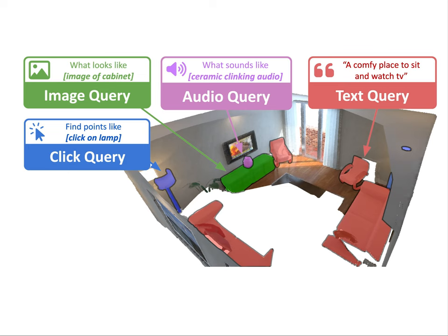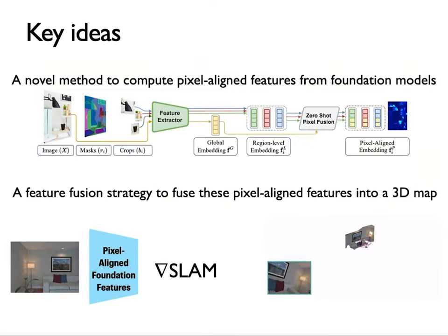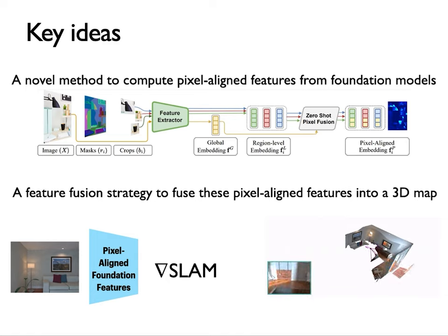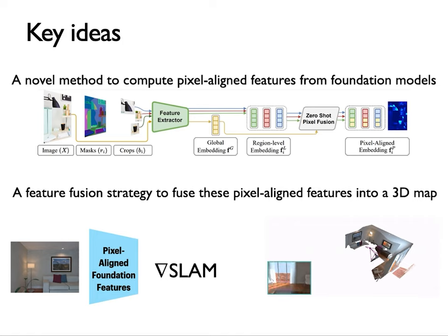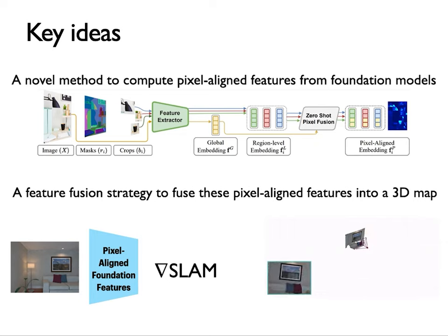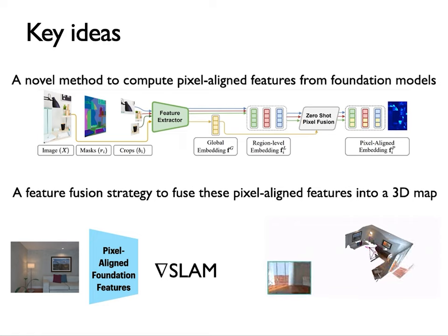So how does Concept Fusion do all of this? Our approach provides two key things. Number one, a novel mechanism by which to use foundation models to compute local per-pixel embeddings, as opposed to just image-level embeddings. And number two, a mapping system that, given a series of images of a scene, allows us to build a 3D point cloud representation where those local per-pixel features for each image are mapped and fused into a feature vector for each point in the point cloud. For more details on our method, please take a look at our paper.